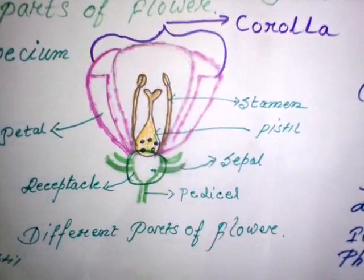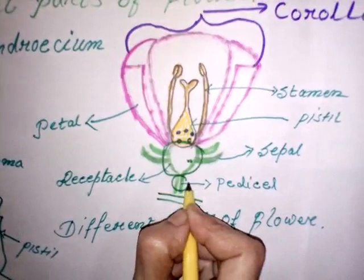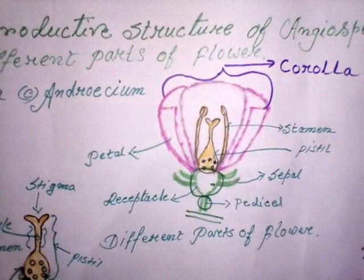Receptacle remains attached with the stem of the plant with the help of a stalk, and this stalk is known as pedicel. Now I am explaining all these four parts of flower one by one.